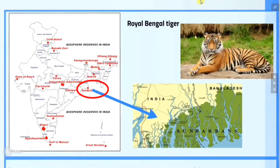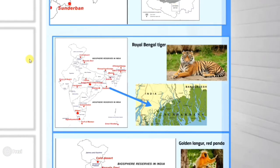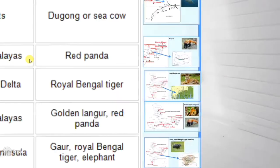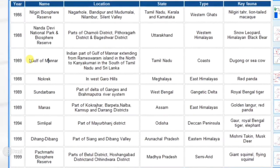Next biosphere reserve is Sundarbans. Sundarbans is part of the delta of the Ganga and Brahmaputra river system and it is located in West Bengal. The main key fauna of this is the Royal Bengal Tiger.